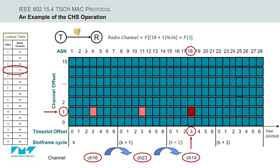The same process is repeated during the subsequent slot frames. Thus, in the slot frame cycle K plus 2, node T will transmit over the radio channel 14, while in K plus 3, it will transmit over the radio channel 21.